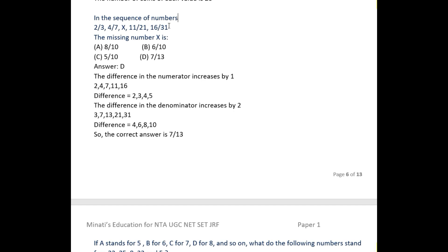In the sequence of numbers 2/3, 4/7, X, 11/21, 16/31, the missing number X is what? Four options are given: A, B, C, D - 8/10, 6/10, 5/10, and 7/13. Now see the progress of the numerator as well as the denominator part.